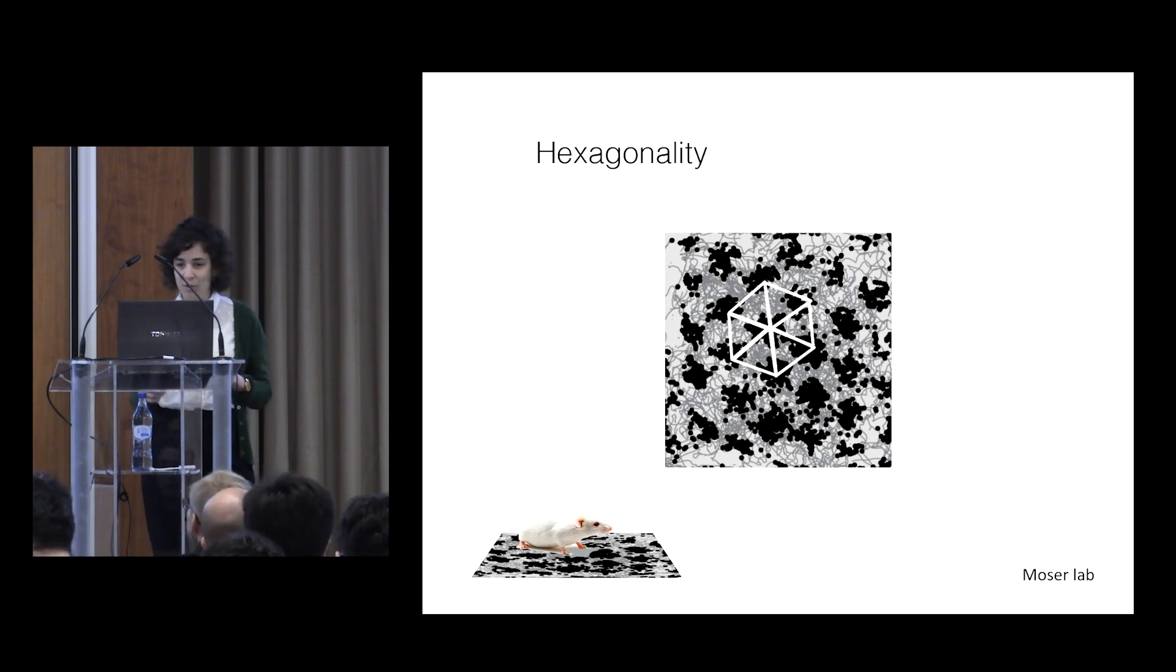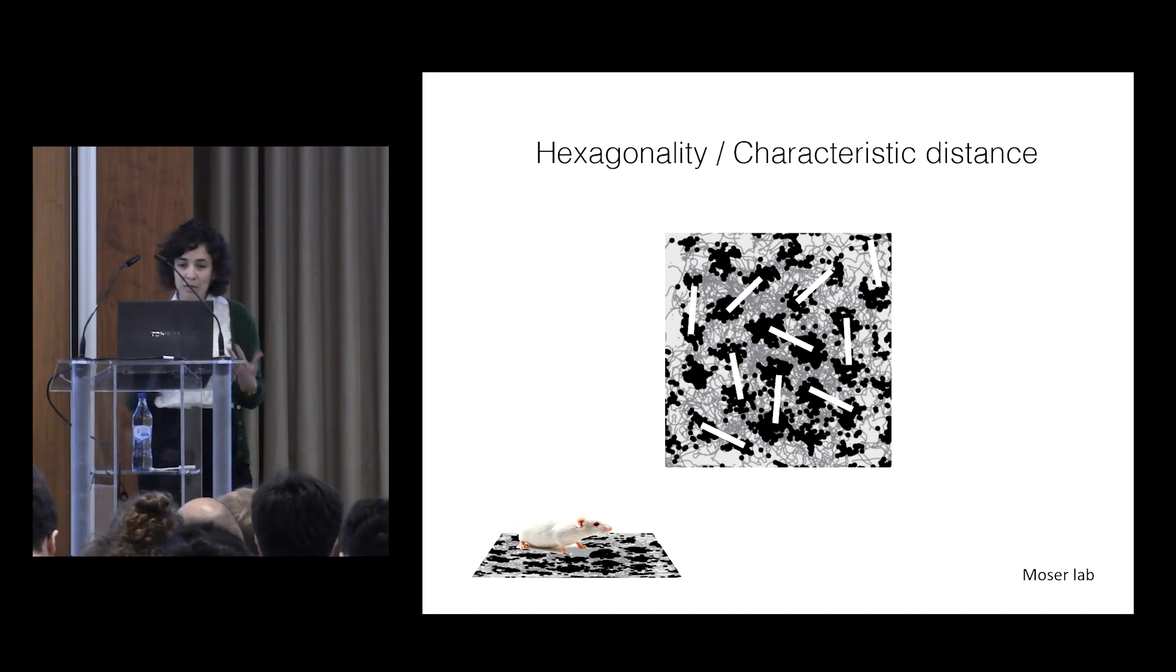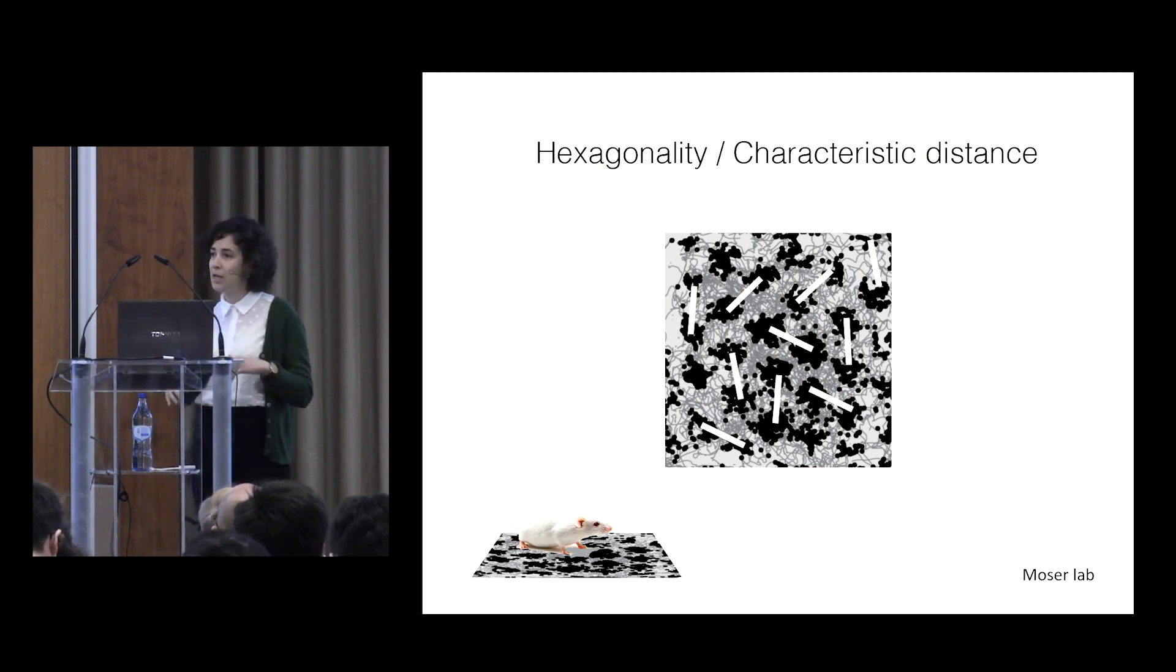That's what grid cells are well known for, but perhaps another more low-level property is the characteristic distances between neighboring fields. I'm going to argue that this property is the one that is maintained in both 2D and 3D, rather than the hexagonality.